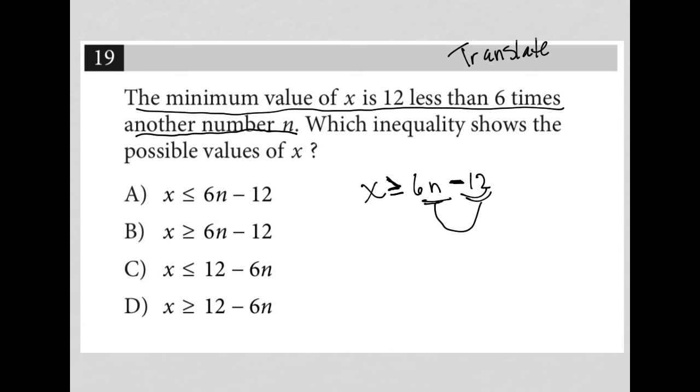So there's my translation. The question says which inequality shows the possible values of X, so it looks like I'm just trying to find which one of these looks exactly like what I have here. X is greater than or equal to 6n minus 12, and that is choice B.